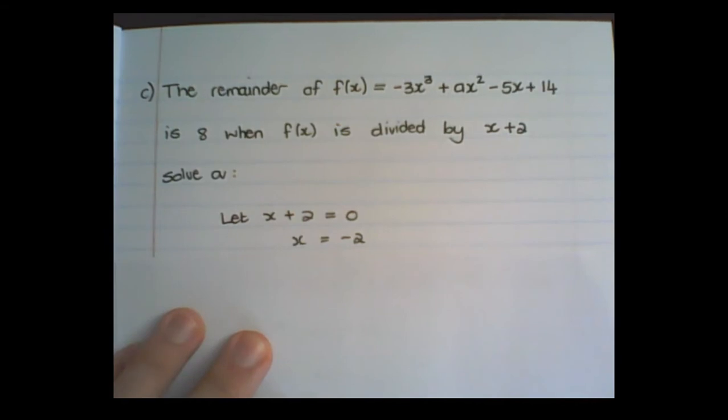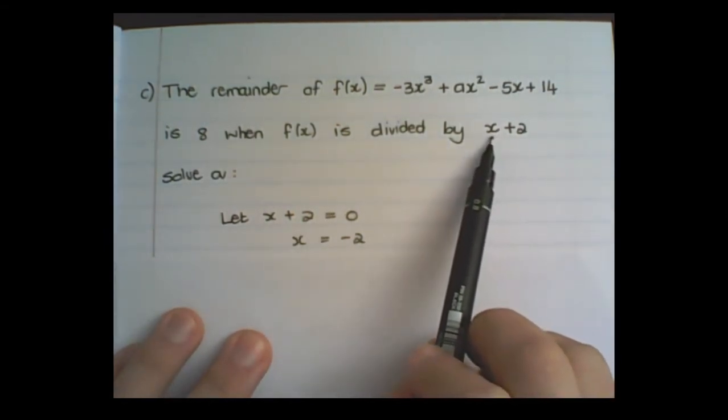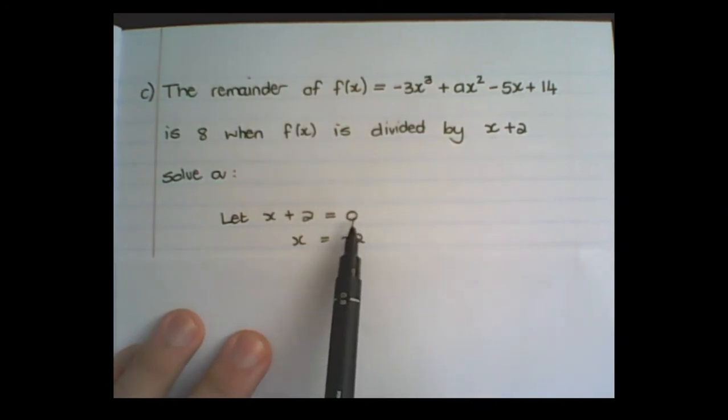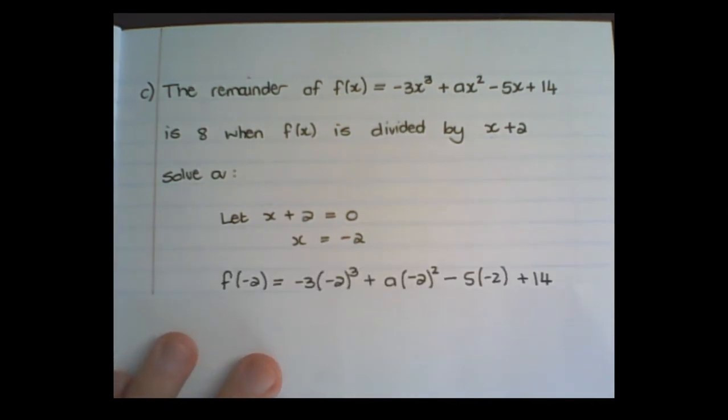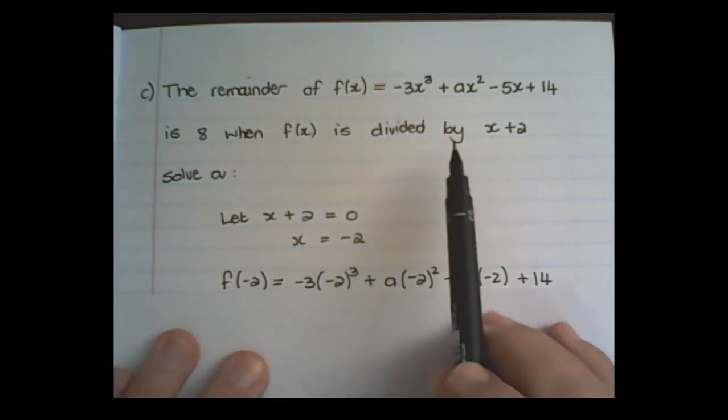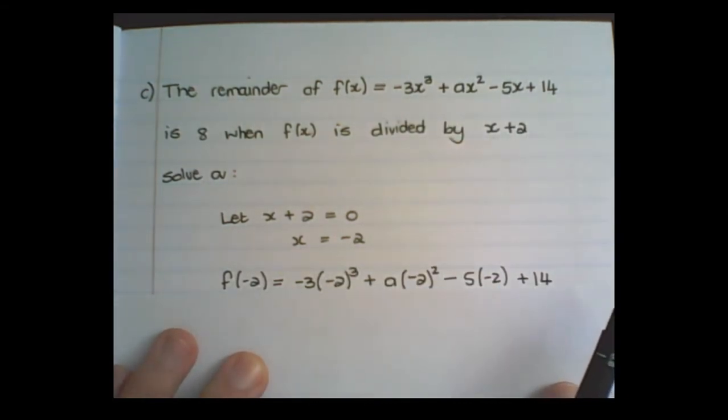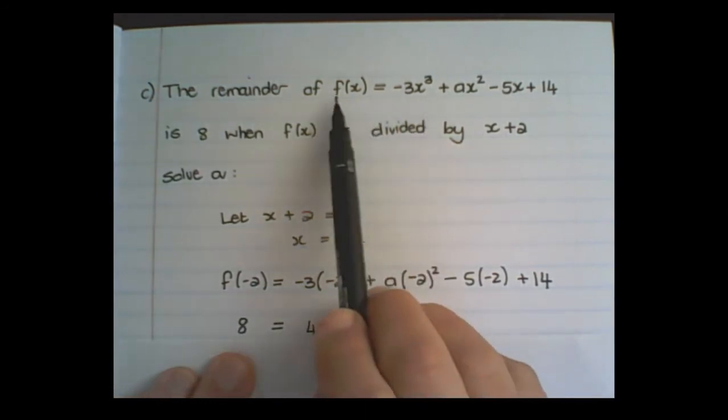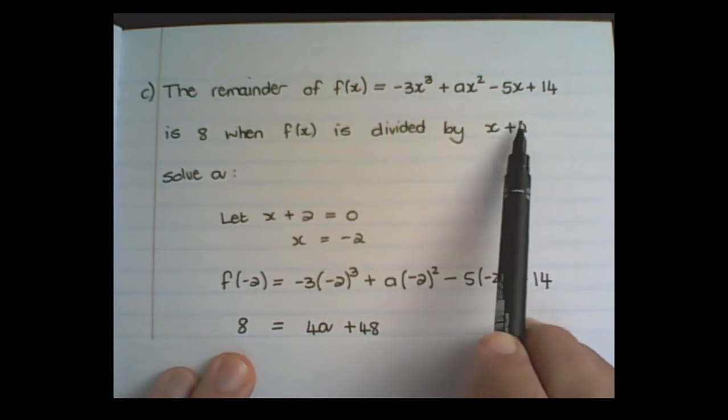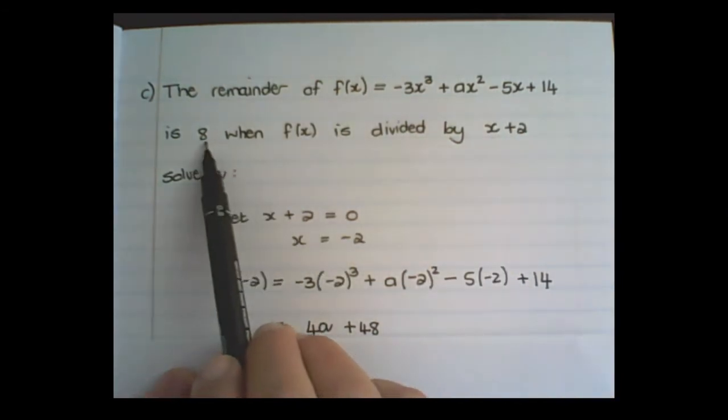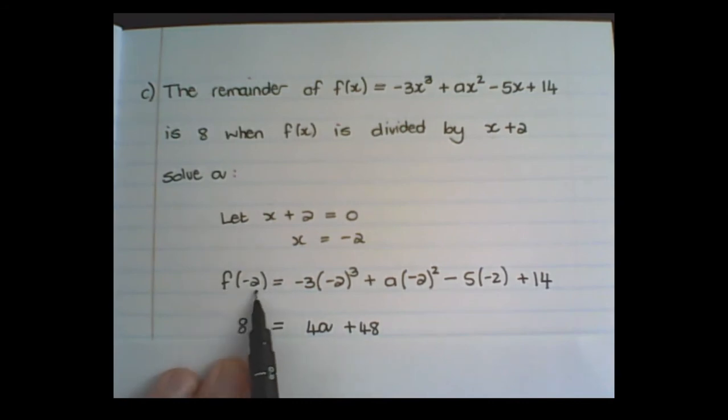So we start with the same steps as before. We take this divider and set it equal to 0. Then I solve for x, which is negative 2. I substitute the value of negative 2 in the expression of fx. But we are given more information that when this expression is divided by x plus 2, the remainder is 8. So if I substitute negative 2 into the expression, then the remainder would be 8.